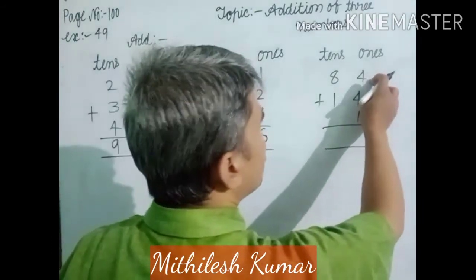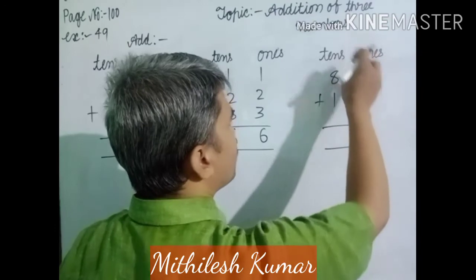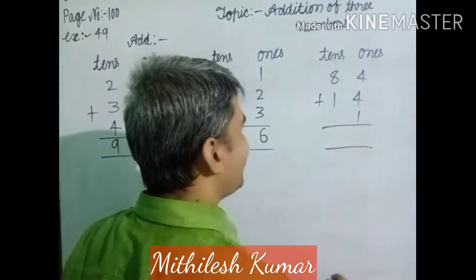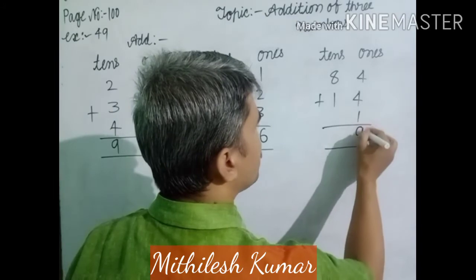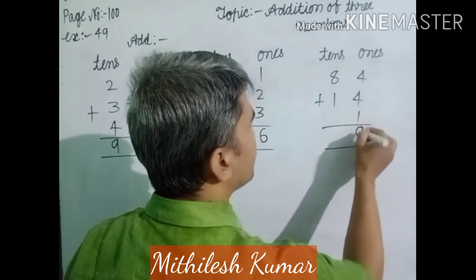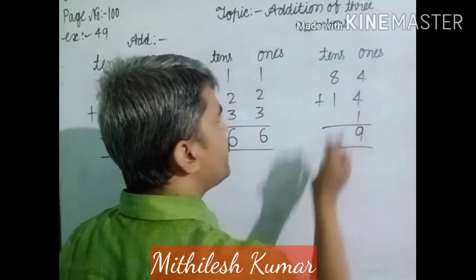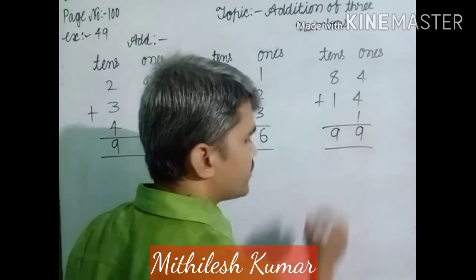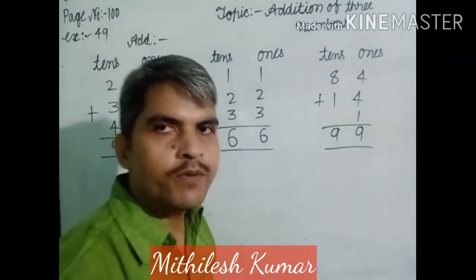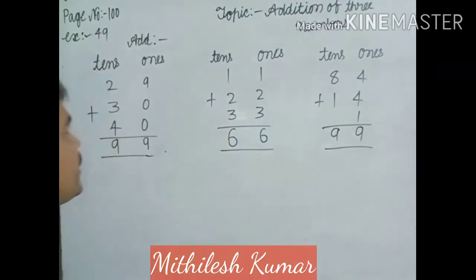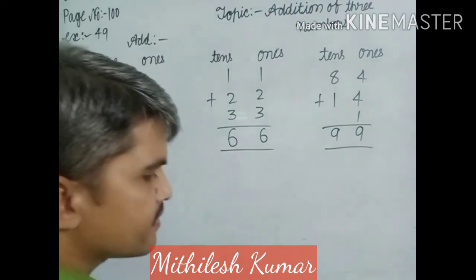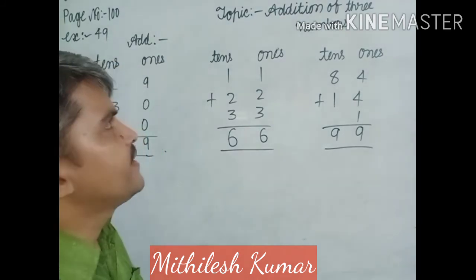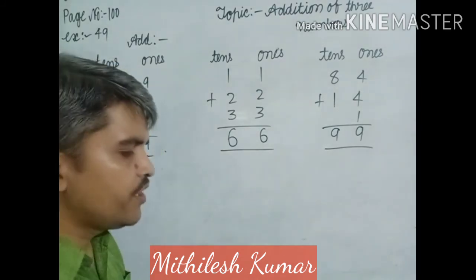Here, in the last question of the related topic — in the 1s digit column: 4 plus 4 is 8, plus 1 is 9. You write here 9. Then in the 10s digit column: 8 plus 1 is 9. In this way, dear students, you solve 10s and 1s digit number additions of 3 numbers.